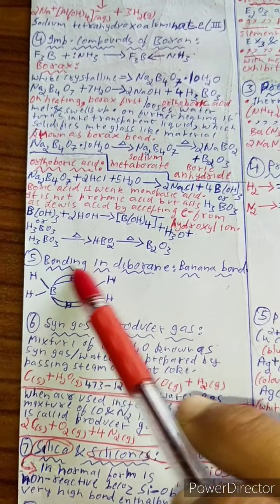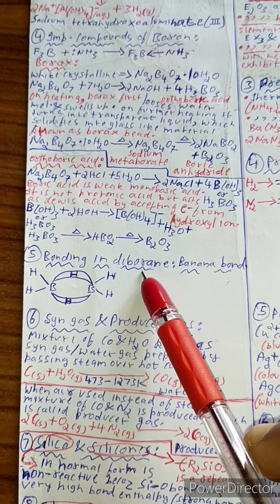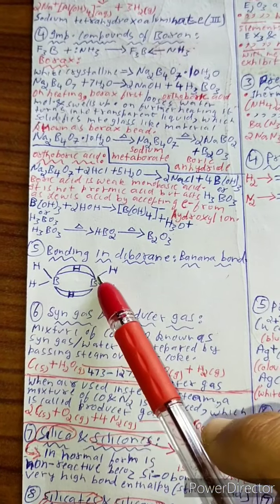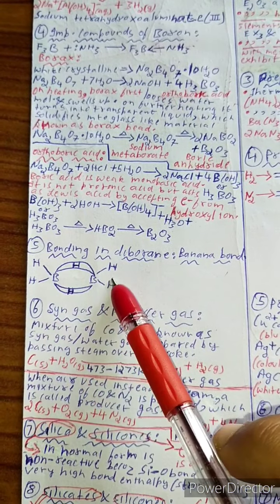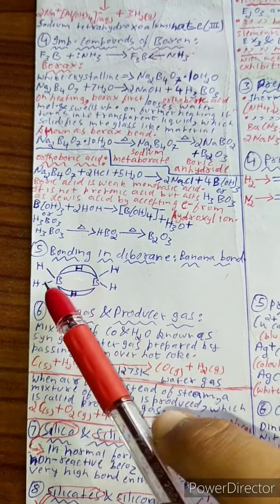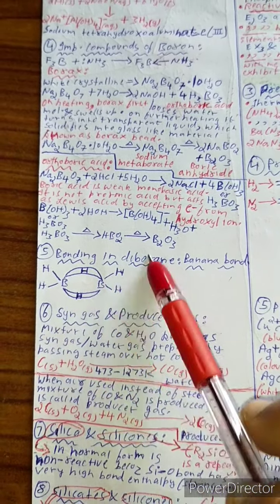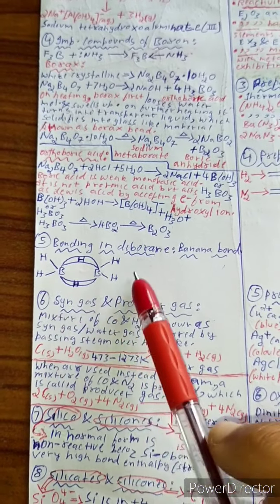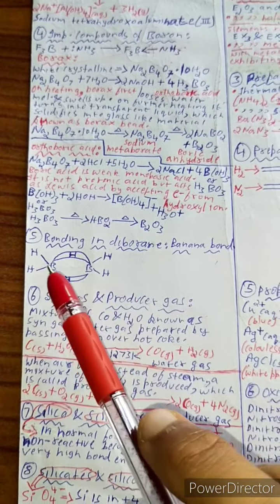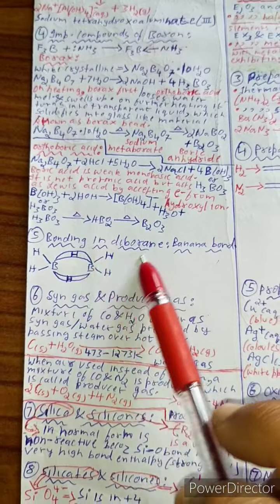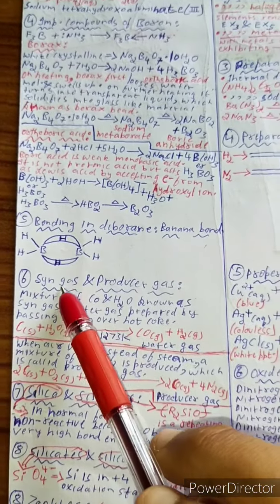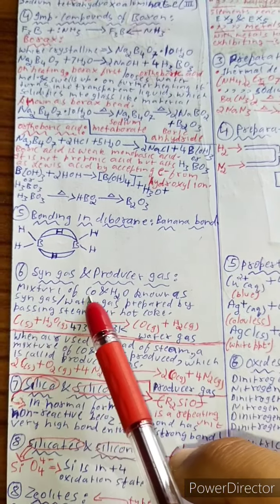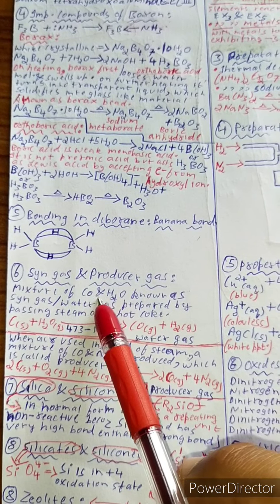The next topic is bonding in diborane, also known as banana bond. The structure of B₂H₆ is in the shape of a banana, so it is known as the banana bond. The formula is B₂H₆.